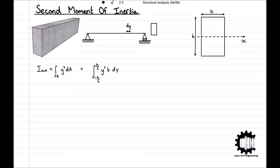The integral of y squared with respect to y is y cubed divided by 3. So, Ixx is equal to b times y cubed divided by 3, evaluated from y equals negative h over 2 to y equals h over 2. Substituting in our boundary limits, we get that the second moment of inertia around the x-axis equals bh cubed divided by 12.